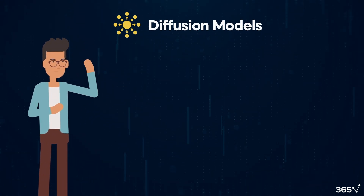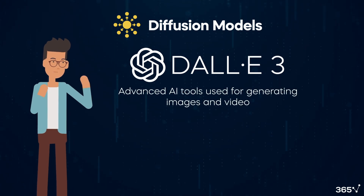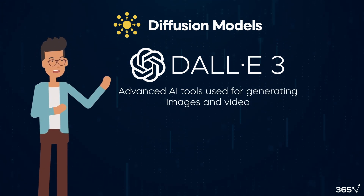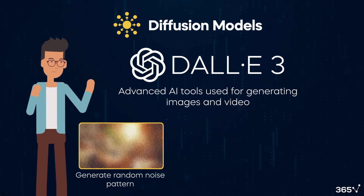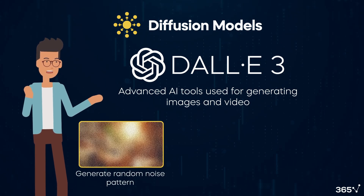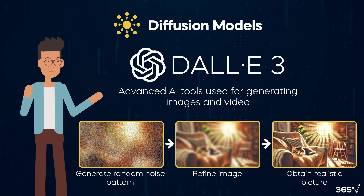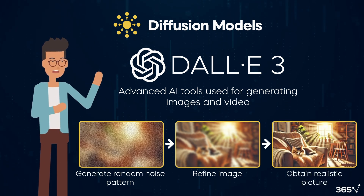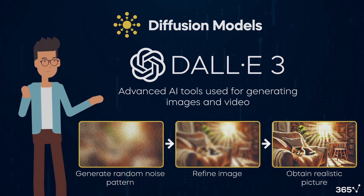Diffusion models, like DALL-E, are advanced AI tools primarily used for generating images and video. During operation, DALL-E begins with a random noise pattern and progressively refines it into a detailed image, applying requested shapes and learned patterns through multiple algorithmic steps to enhance realism.